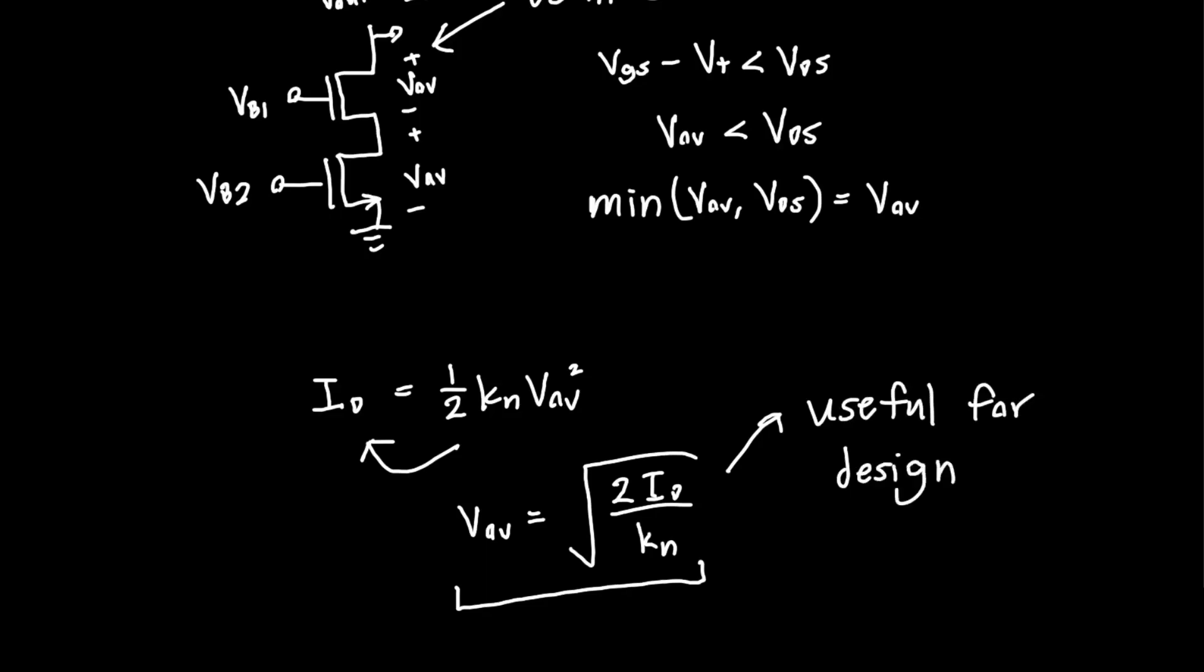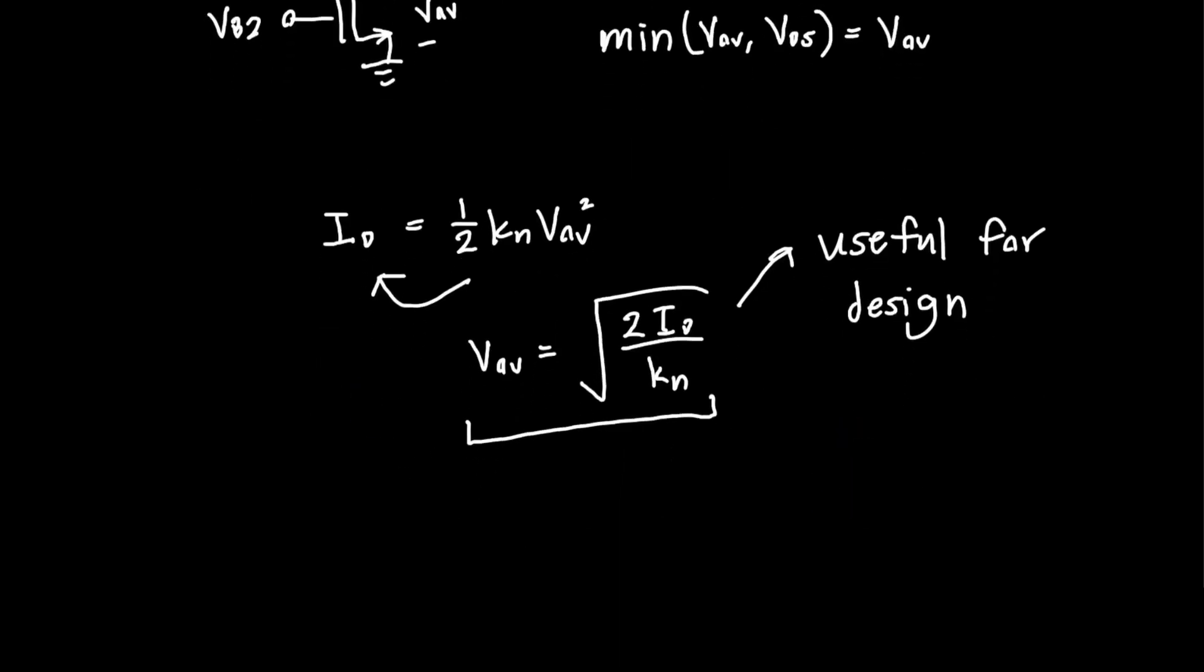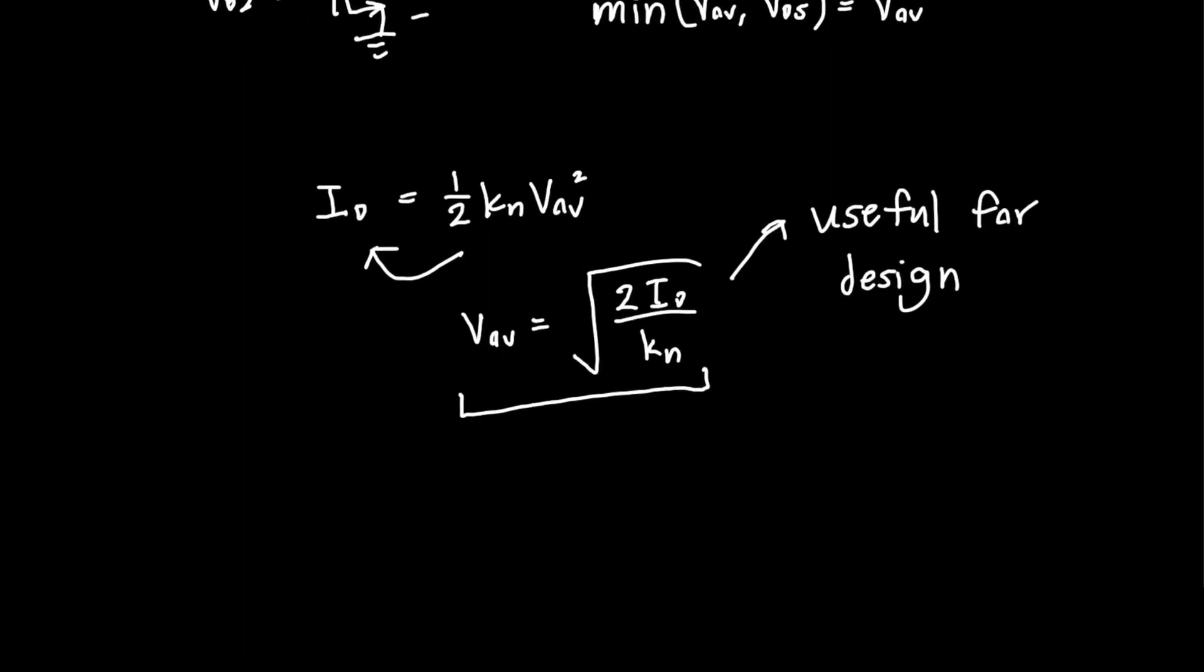So basically, the overdrive voltage is completely eliminating the need to worry about the threshold voltage. So no more worrying about VT. All you need to know is the current and the overdrive voltage, or the current and the dimensions of the transistor.